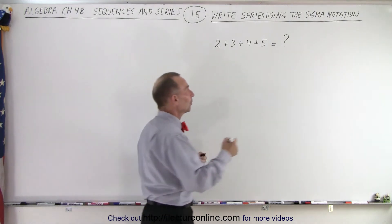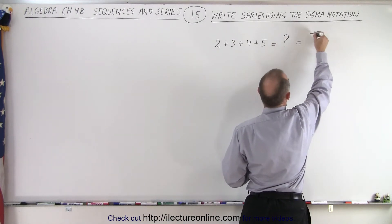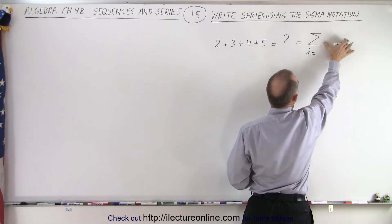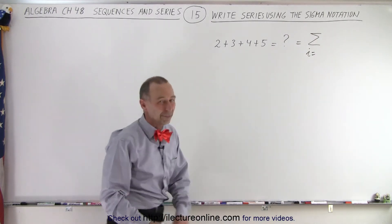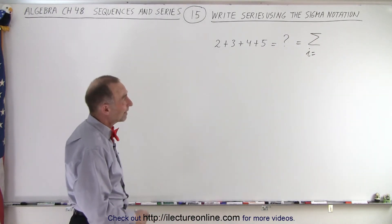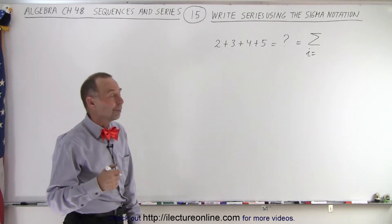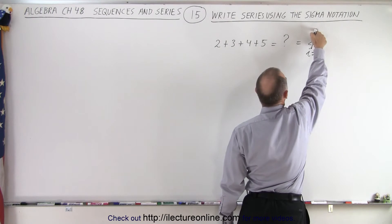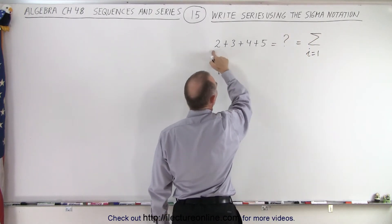Somehow we have to convert it to something that looks like this: the summation where i is equal to from one number to another number of some expression over there so that it equals this sum right there. Typically we want to start from i equals one and then we have an upper limit. The upper limit usually expresses how many terms we have.